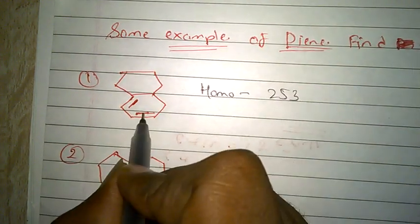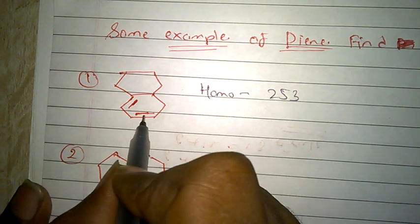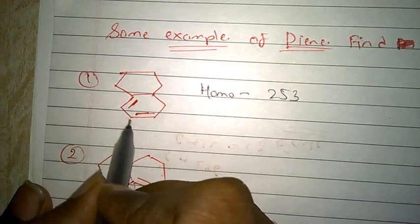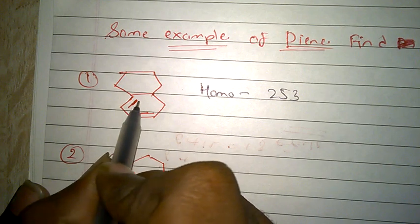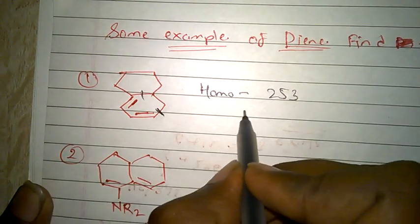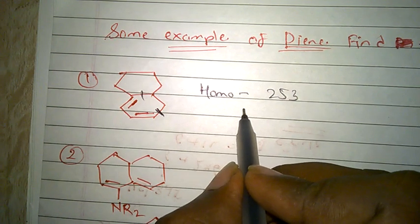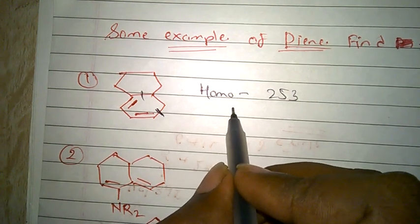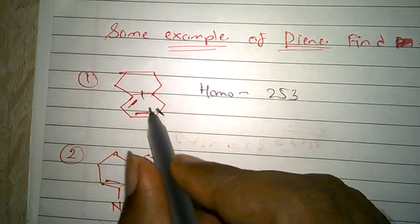Next, we have to see the ring residues. This is a ring residue. There are two ring residues. Then multiply by 5 for one residue. For one ring residue it's 5, so here are two ring residues, add 10. I have multiplied 2 into that 5.